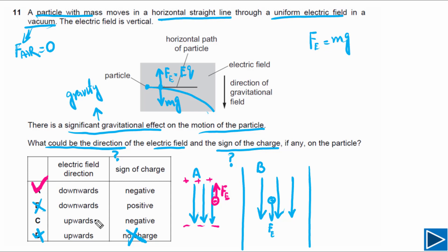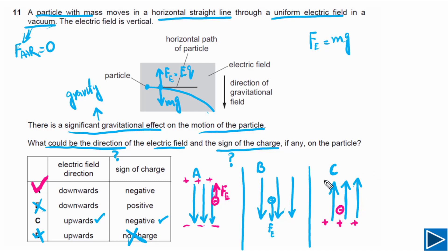For option C, the electric field direction is upward and the sign of the charge is negative. A negative charge in an upward electric field experiences force opposite to the field direction, so the force acts downward. This is also not a possible option because the electric force must point upward. Therefore, the answer is A for this question.